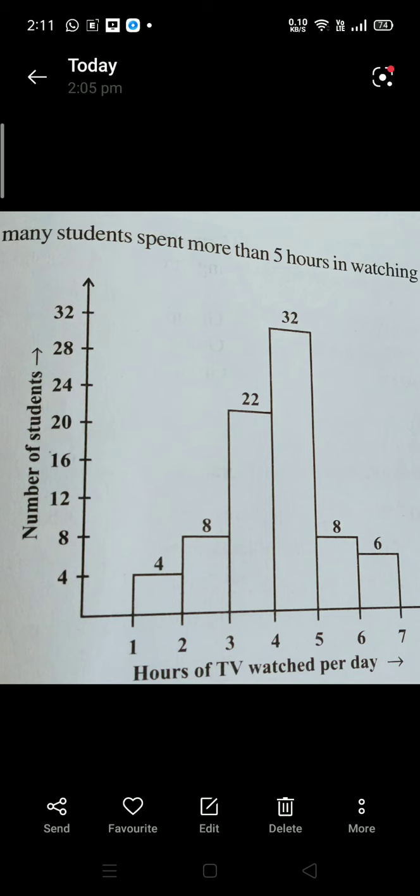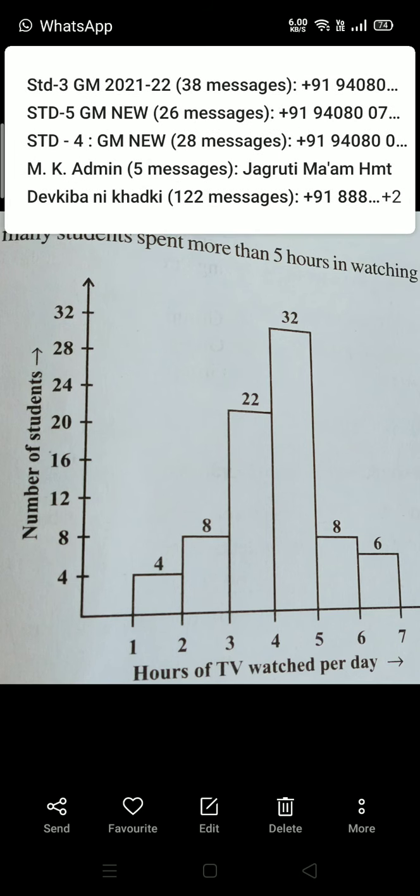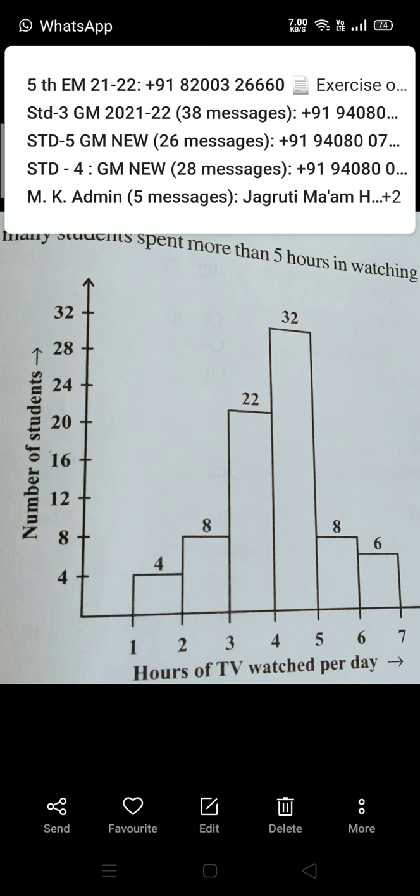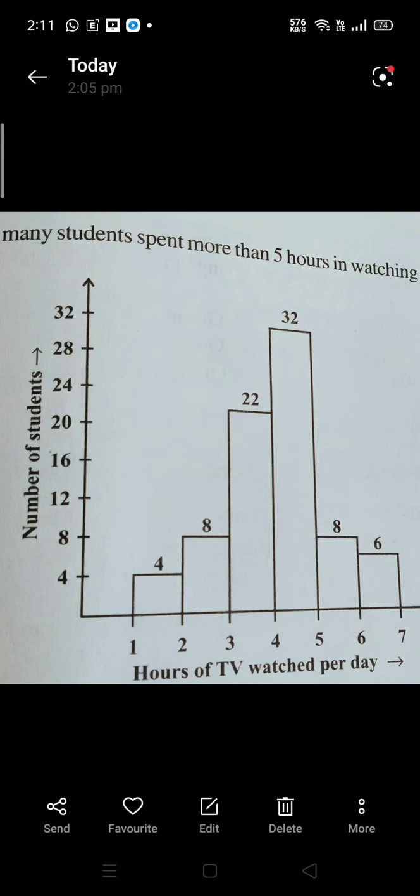Now if I question you, how many students watch TV for less than four hours? For less than four hours, you have to see where four hours is down. Can you see hours of TV? Over there where four is there, before that you just have to count three to four, you leave it. Till four you have to count all the numbers. So 1 to 2 is 4, 2 to 3 is 8, so add it, 4 plus 8 is 12, and 3 to 4 is 22, 12 plus 22.